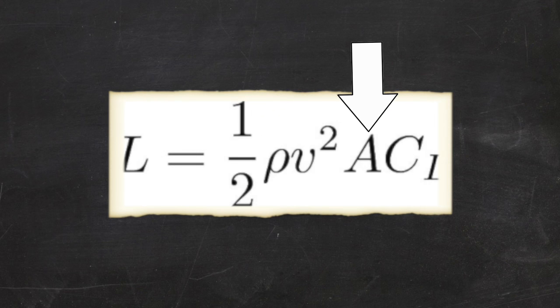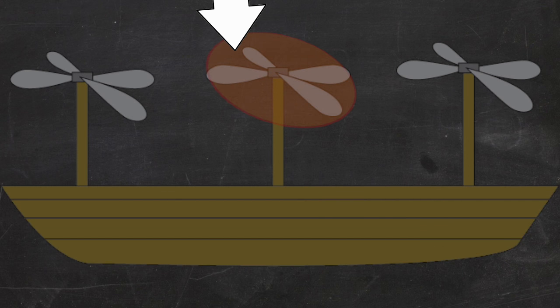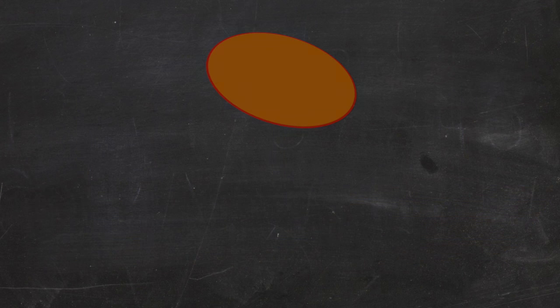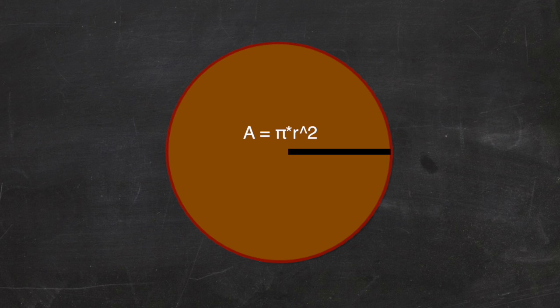We'll start with A. This A symbolizes the area one blade sweeps. Assuming it will sweep in a circle, the area is the number pi times the length of the blade squared.